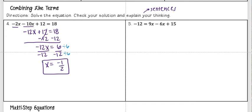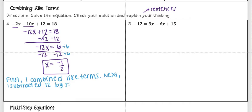And so for explaining my thinking, I'm going to say: first, I combined like terms. Next, I subtracted 12 by subtraction POE.